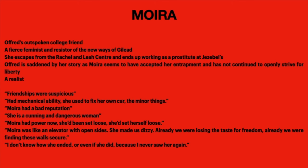Importantly, Moira is a character that Offred knew before the regime took over and also after, so you can see the change in their relationship. Key quotes: 'She had a mechanical ability, she used to fix her own car.' 'Moira had a bad reputation — she is a cunning and dangerous woman.' 'Moira had power now, she'd been set loose... Moira was like an elevator with open sides, she made us dizzy. Already we were losing the taste for freedom, already we were finding these walls secure.' That's such a good quote — when she escaped from the Rachel Center, Offred remarks that all these future handmaids had already started to accept their lives.